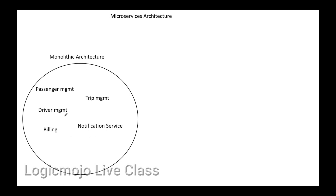This is the monolithic architecture Uber started with in their first version, but they found a lot of problems. All core features like passenger management, driver management, billing, and everything were composed into a single framework. This single codebase with multiple modules created a lot of chaos during development as well as deployment — for example when deploying to Jenkins or any build server.